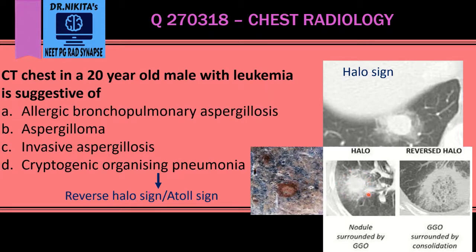To differentiate ground glass from consolidation: in ground glass, as seen in the surrounding halo, we can see the underlying pulmonary vessels, while in consolidation it is very dense and obscures the blood vessels. So to summarize: the reverse halo sign or atoll sign indicates cryptogenic organizing pneumonia, while the halo sign indicates angio-invasive aspergillosis.